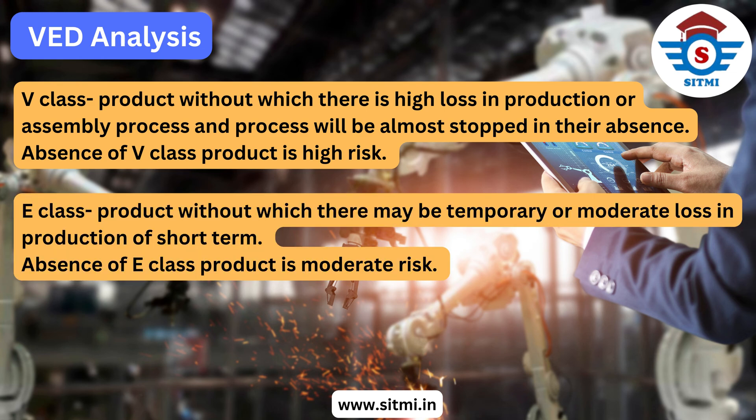The second class is E class products. These are products without which there may be a temporary or moderate loss in terms of production or assembly line, which is why they are referred to as essential. The absence of an E class product represents a moderate risk in the production or assembly line.